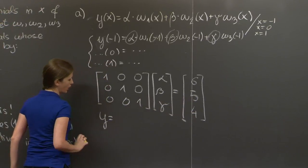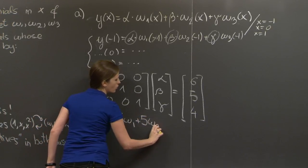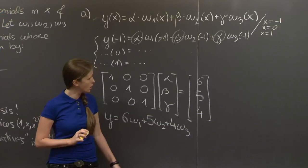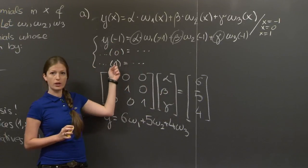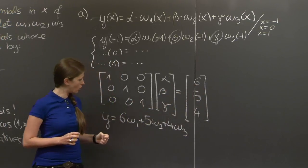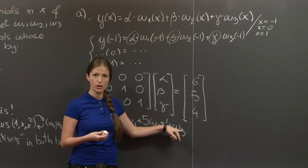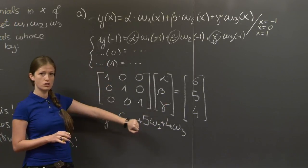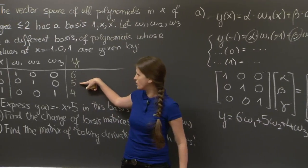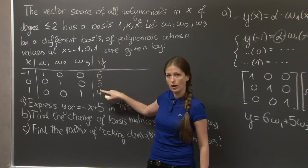So the solution to the first part is y = 6w1 + 5w2 + 4w3. And let's notice another thing. No matter what values we put here, this matrix is always going to stay the same. It's only the right-hand side that's going to change. So if we're given any other polynomial to express in basis w1, w2, w3, we just go back to our table and read off these values.